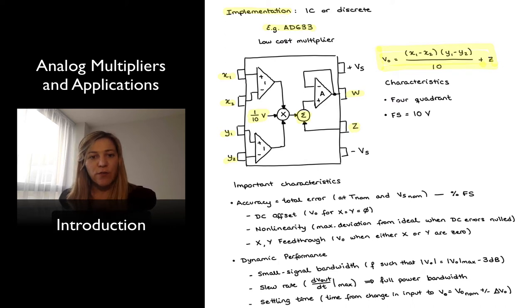If we look at the datasheet for an analog multiplier, some of the most salient characteristics will be the accuracy, which represents the total error. Sometimes it is presented at a nominal temperature and a nominal supply voltage, and then the variation and drift with both temperature and supply voltage are specified. The total error is typically specified as a percentage of the full-scale voltage. Sometimes the total error is split up into its different components, which will be the DC offset, that means the value of the output when both inputs are equal to zero.